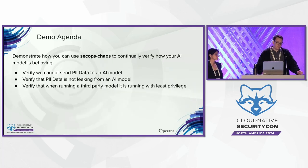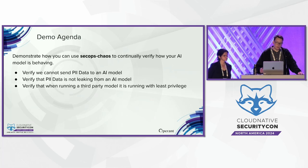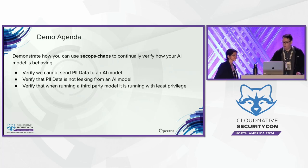Now onto our demo portion. We have three scenarios to cover: first, we'll verify we can't send PII data to an AI model from our network; second, we'll verify that PII data is not leaking from an AI model; and third, we'll verify that when running third-party models it's running with least privilege.